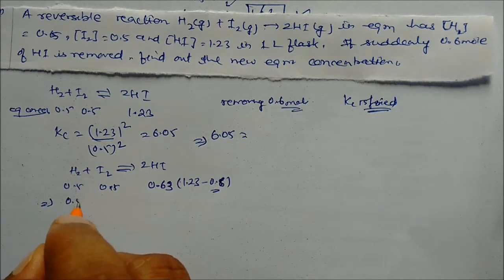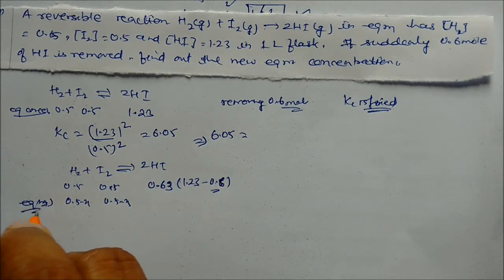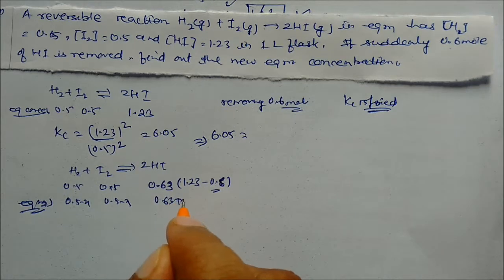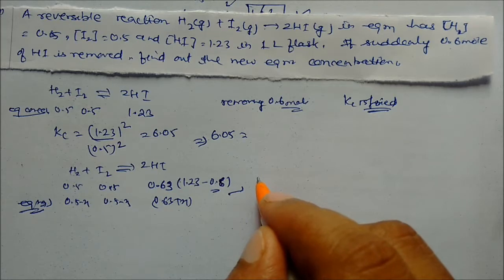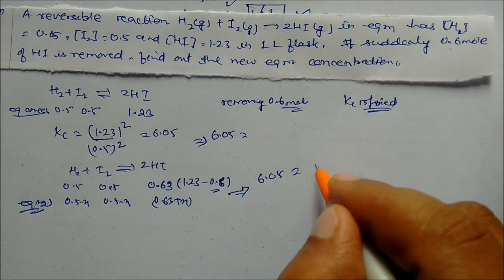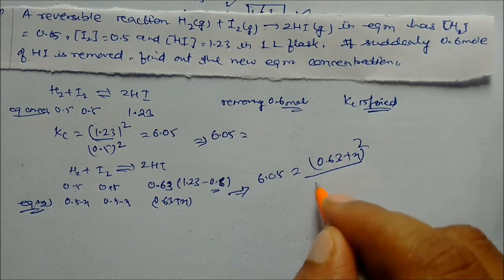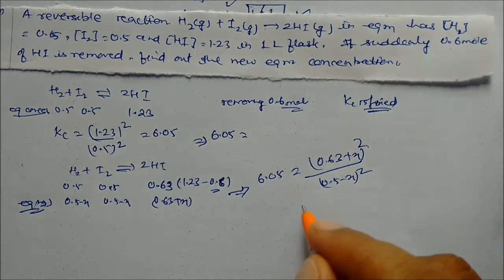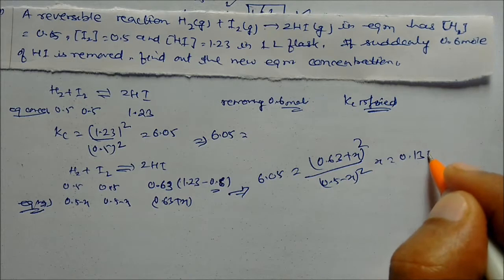At equilibrium, H₂ = 0.5 − x, I₂ = 0.5 − x, and HI = 0.63 + 2x. Since Kc = 6.05, we write (0.63 + 2x)² / (0.5 − x)² = 6.05. On solving, x = 0.134.